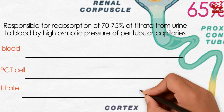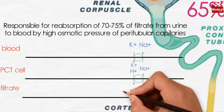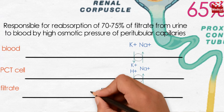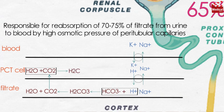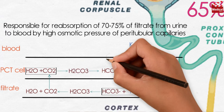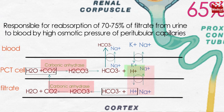Sodium enters the cell from the lumen through the antiport mechanism in exchange with a proton, then is discharged into the blood through the sodium-potassium ATPase pump. The proton present in urine binds to bicarbonate to form carbonic acid, which then dissociates to carbon dioxide plus water released in urine. Carbon dioxide diffuses back and reacts with water again to enter another cycle. The binding and dissociation of carbon dioxide and water into carbonic acid is mediated by the carbonic anhydrase enzyme, which is responsible for producing protons that help sodium enter the cell. So if this enzyme is inhibited, sodium will not be reabsorbed from this part of the nephron.